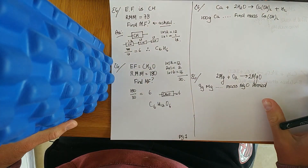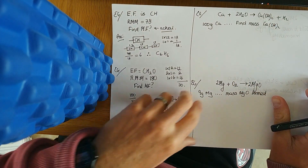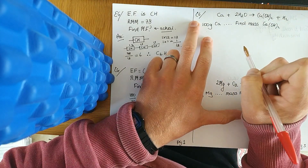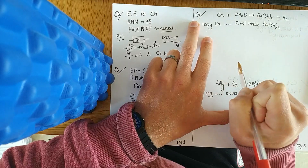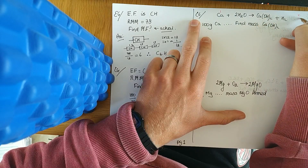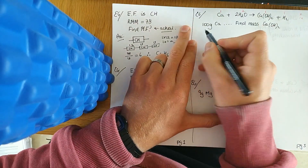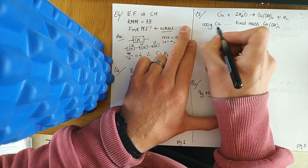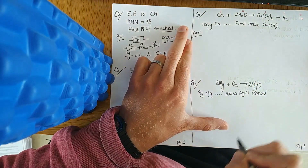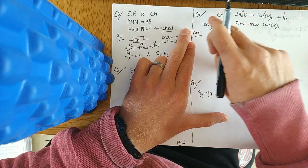Now moving on to calculations based on balanced equations — sometimes you may have to balance them first. Here they are already balanced. The numbers in front tell us how many moles are reacting: the molar ratio here is 1 to 2 to 1 to 1. They tell us we've used 100 grams of calcium and they want to find the mass of calcium hydroxide. We find the number of moles of calcium, plug it into the molar ratio, and then find the mass of calcium hydroxide.